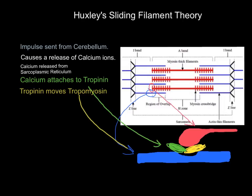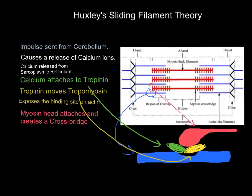The calcium attaches to troponin, which then moves the tropomyosin. Now the binding site is exposed — troponin and tropomyosin are out of the way — and the myosin head can attach and create a cross bridge.